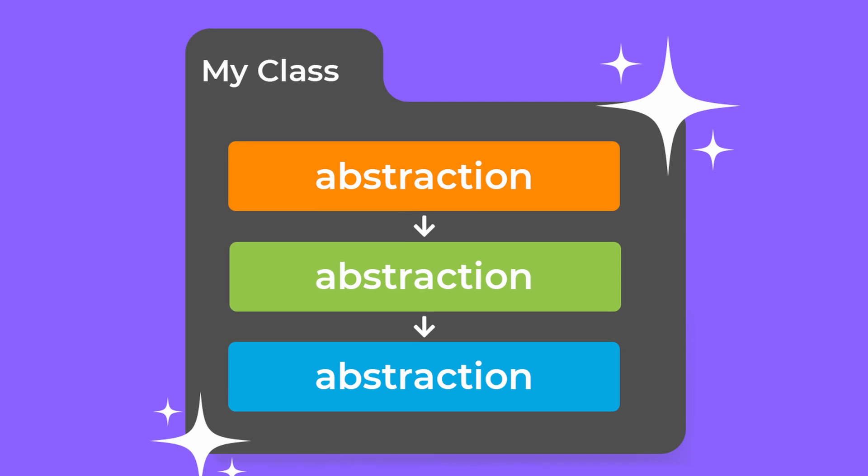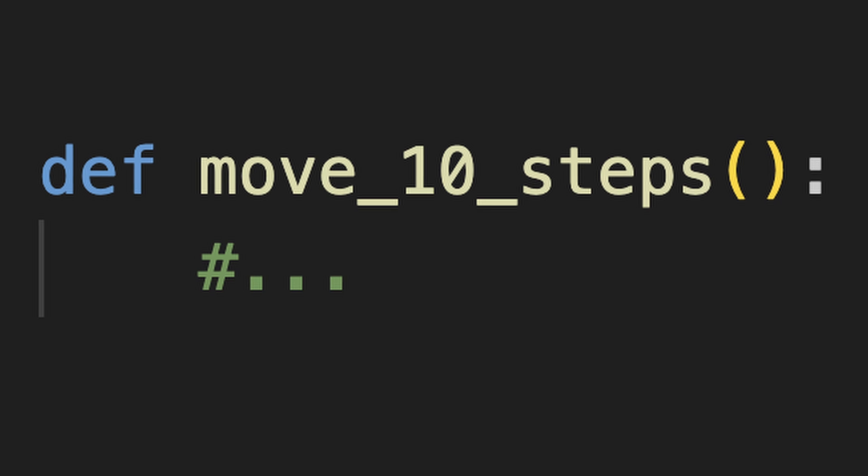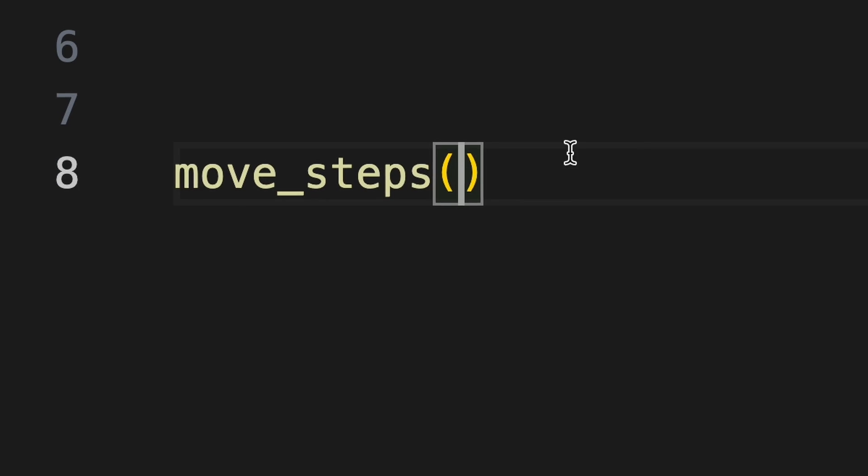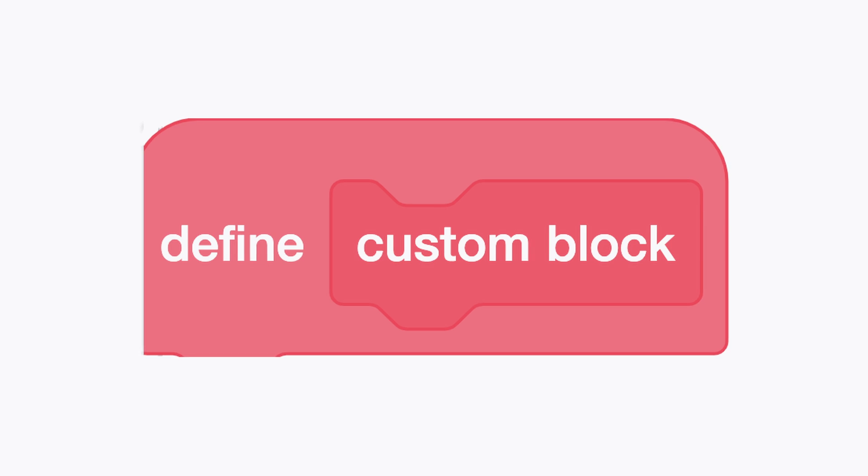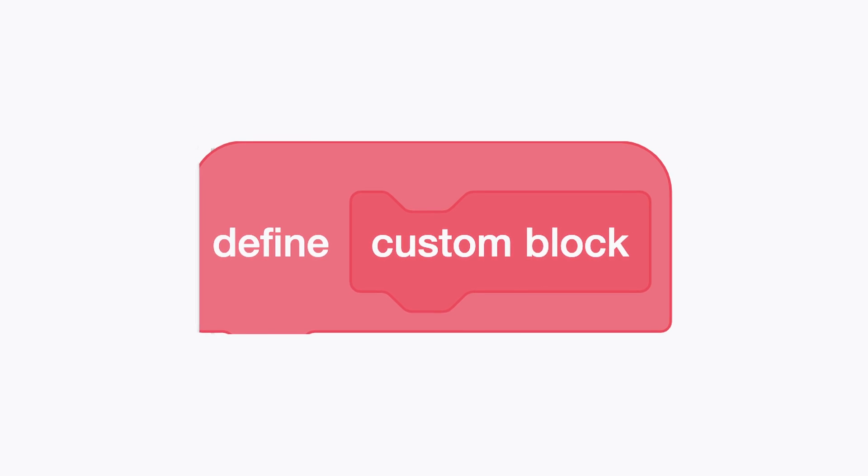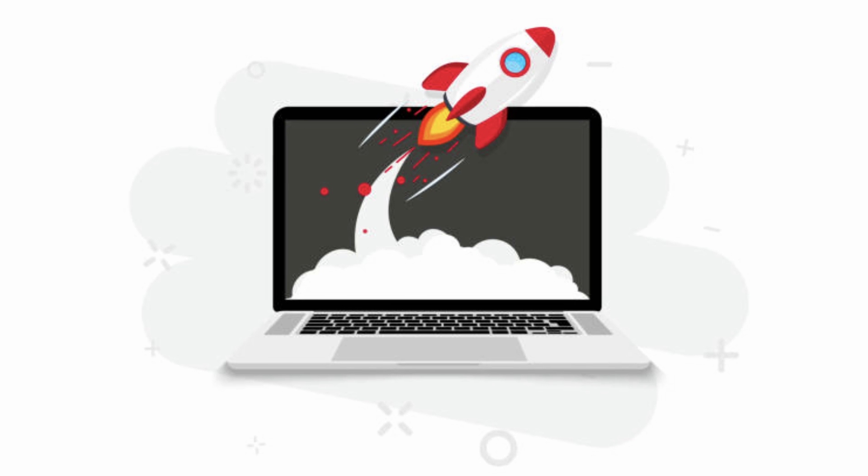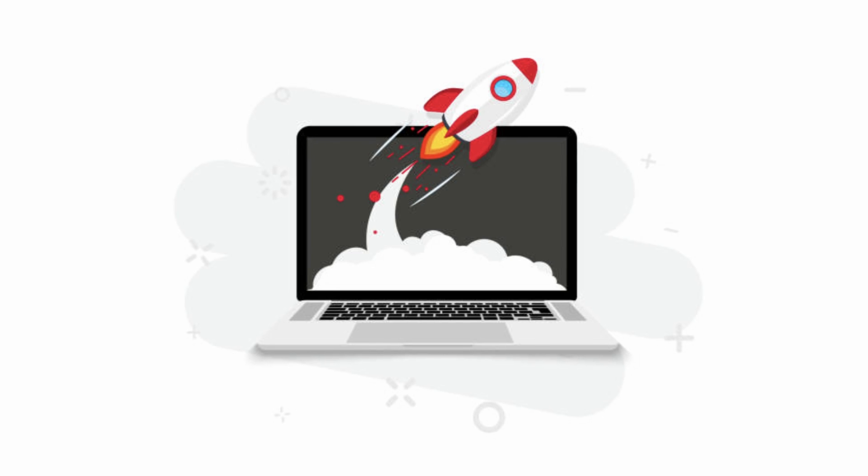Moreover, we can introduce abstraction and modularity to our code by creating our own functions and adding our own parameters to them, which are represented by custom blocks and text inputs. This allows our code to be simpler, faster, and more efficient.